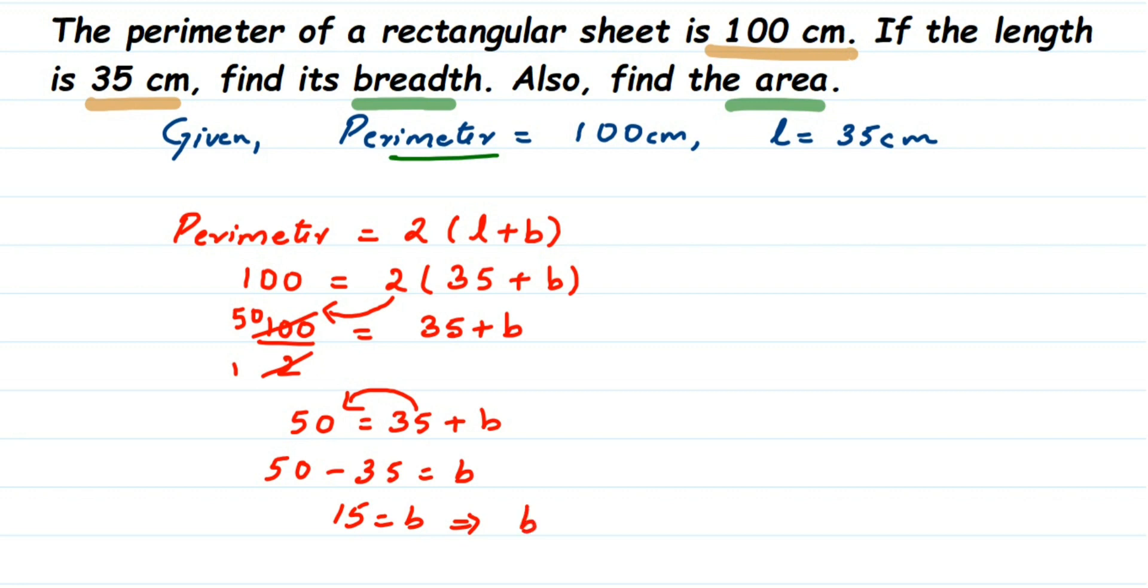So we got breadth is equal to 15 centimeters. Now we got breadth, and we know length from the question. Using these two we're going to find out the area. Area of rectangle is equal to length into breadth, so length is 35 multiplied by breadth is 15.